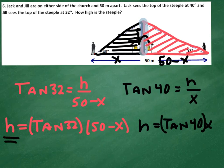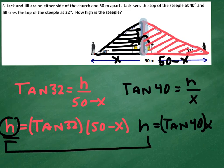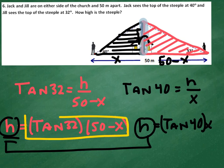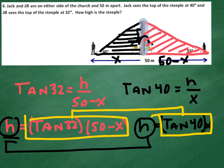What I want you to notice is that both expressions equal h, so you're able to set them equal to each other: tangent of 32 times (50 minus x) equals tangent of 40 times x. The good news is there are x's involved, but that's a single variable and you should be able to solve anything with a single variable at this stage. If this wasn't enough help, look closely at the lesson video — it's much more detailed.